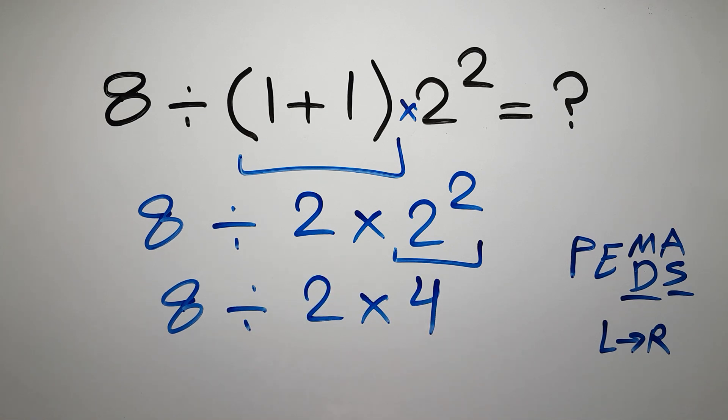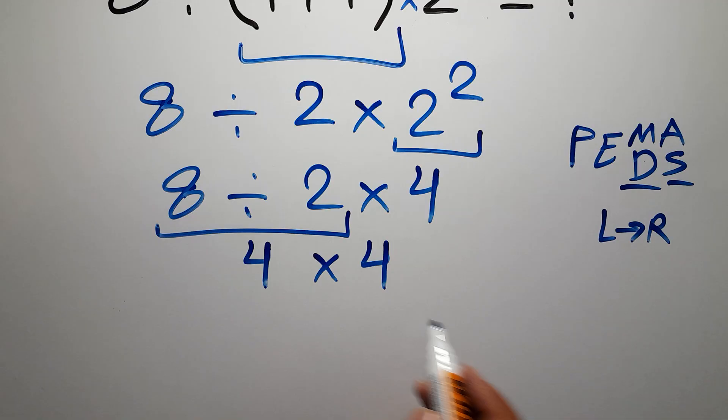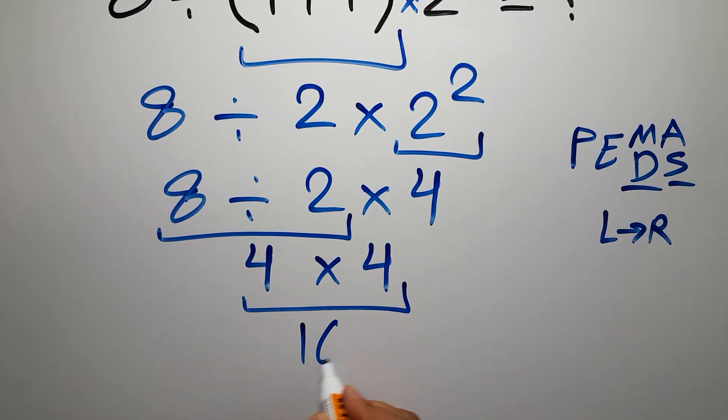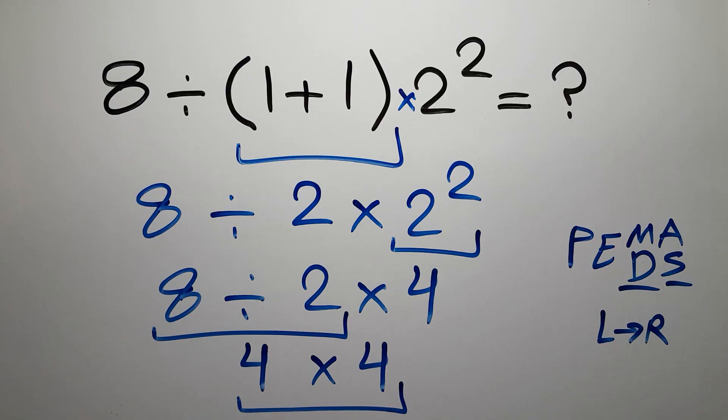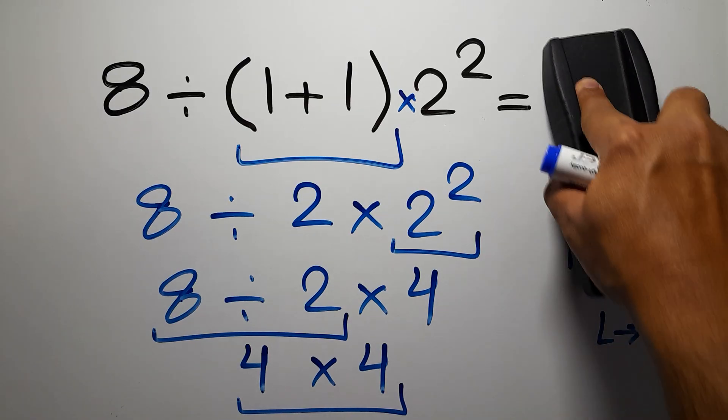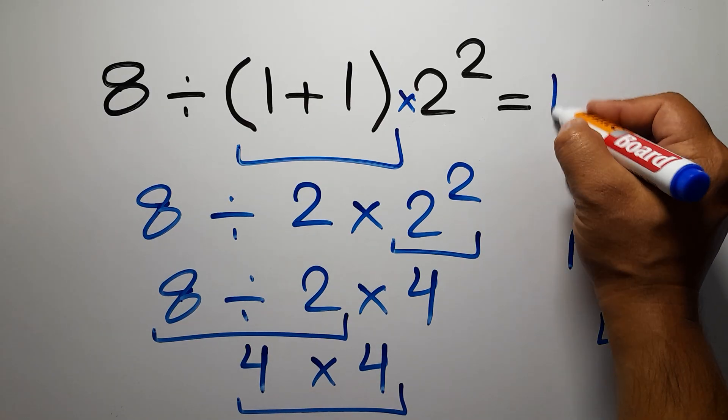Now we have to work from left to right. So first, 8 divided by 2, which equals 4, and 4 times 4, which gives us 16. This is our final answer to this problem. The correct answer is 16.